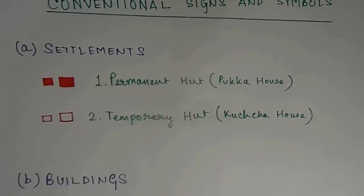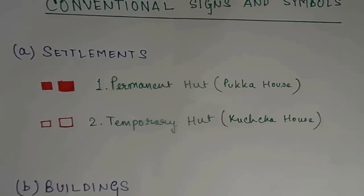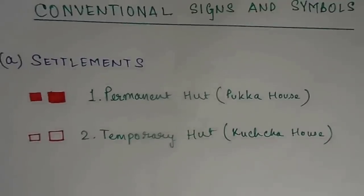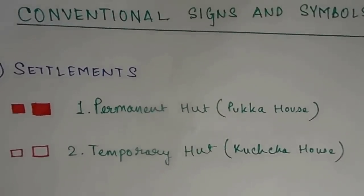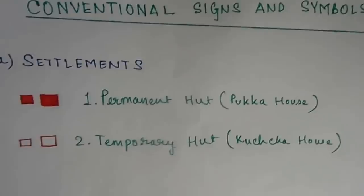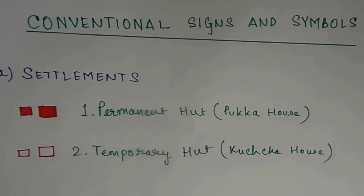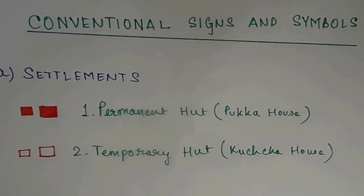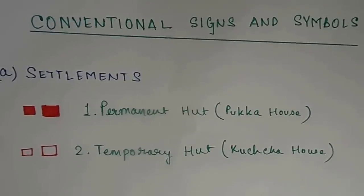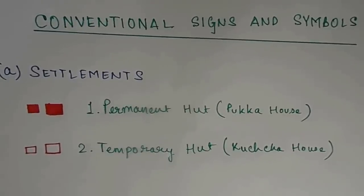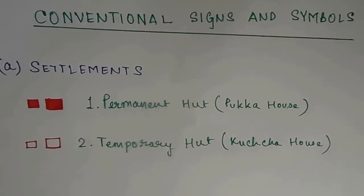So let's start with settlements first. Now settlements simply means towns or cities. These are formed by the combination of huts. We have two types of huts: permanent huts, fully marked in red, meaning pakka house, and temporary huts, represented by a red box, meaning kaccha house.